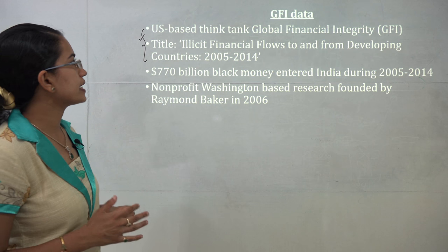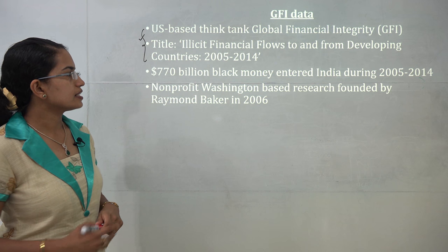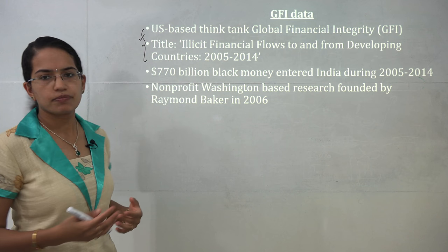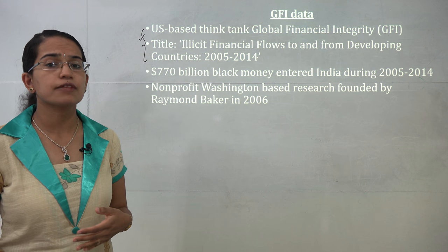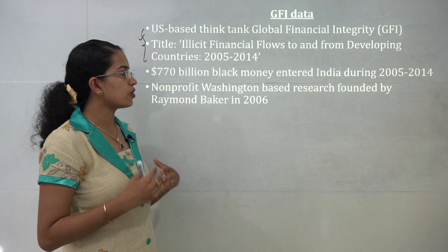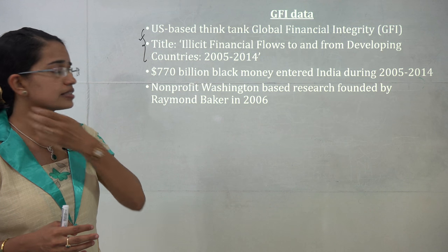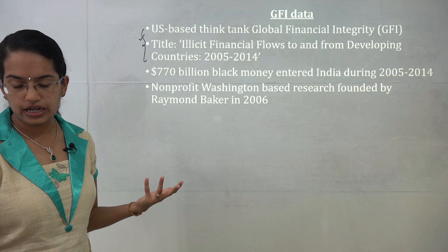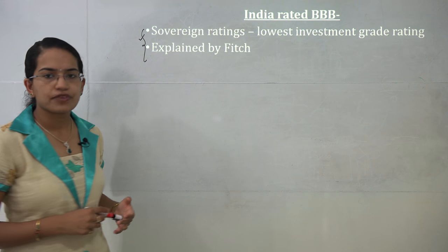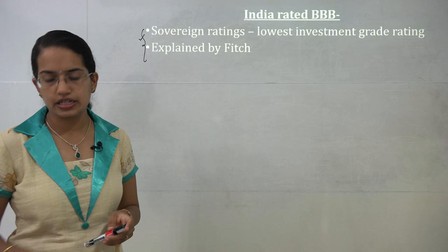GFI — the US-based think tank Global Financial Integrity — published a report titled 'Illicit Financial Flow to and from Developing Countries during 2005 to 2014,' finding that nearly 770 billion dollars of black money entered the market during this period in India, highlighting the need for more anti-corruption measures. The sovereign rating list released by Fitch rates India at BBB negative, showing one of the lowest investment grade ratings.